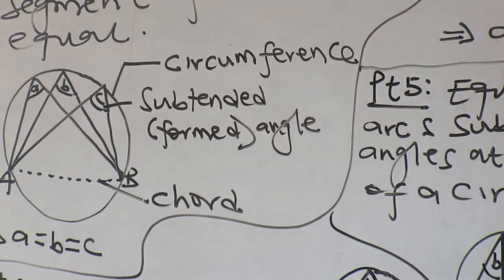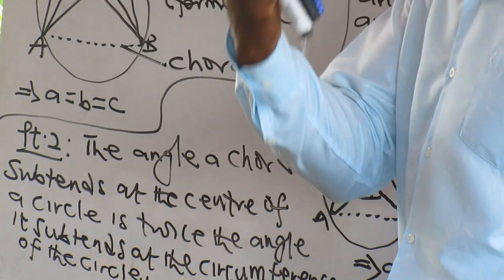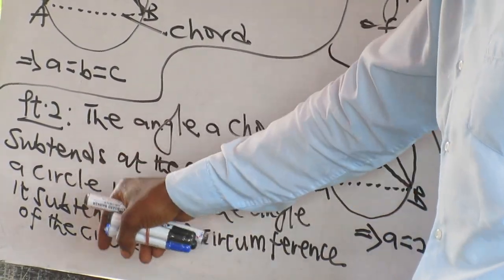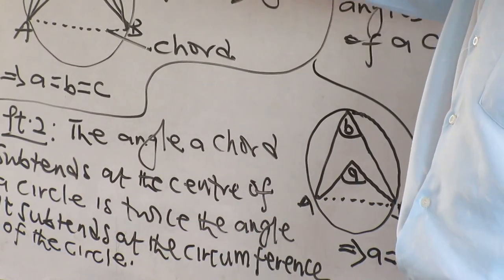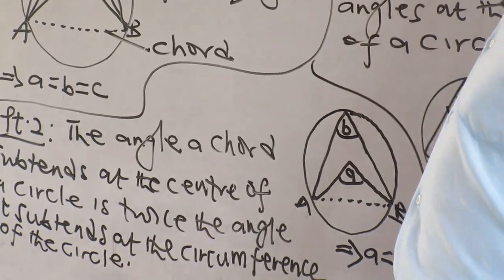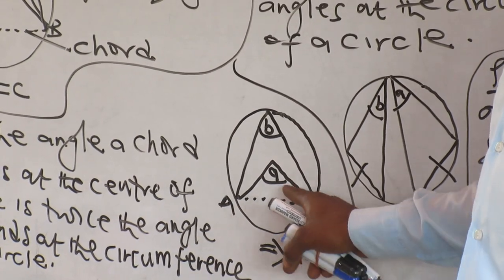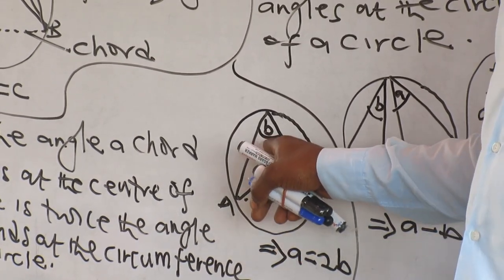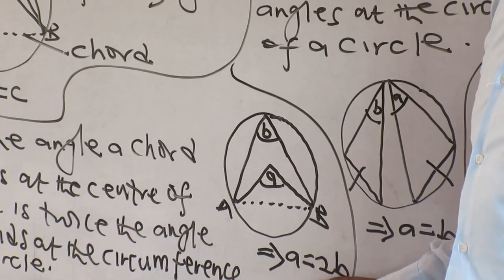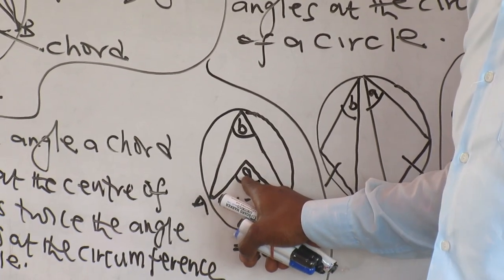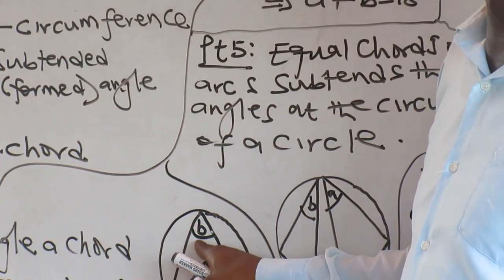Property two (BT2): the angle a chord subtends at the center of the circle is twice the angle it subtends at the circumference — the segment. So if chord AB forms an angle A at the center and angle B at the circumference, then A equals two times B. If B is 40, then A is 80.